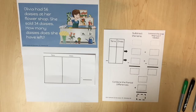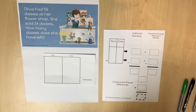It is suggested that students find the partial difference of the ones place first because regrouping may be necessary. Additionally, students are accustomed to working in the ones place first in previous lessons and will work in the ones place first when they use the standard algorithm in later lessons.